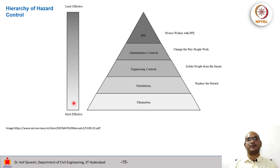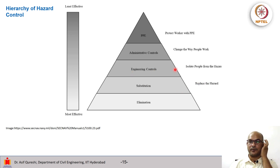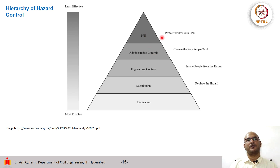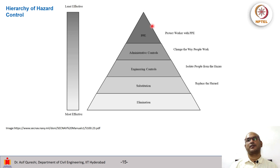This is the hierarchy of hazard control, except here the most effective is at the bottom and least effective at the top. Most effective is to eliminate the source, then substitute the hazard, then engineering controls which means isolate people from the hazard, then administrative controls meaning change the way people work, and then PPE which means protect the worker with PPE. In residential buildings another option was to move the person out, but this probably cannot be achieved in an office environment.